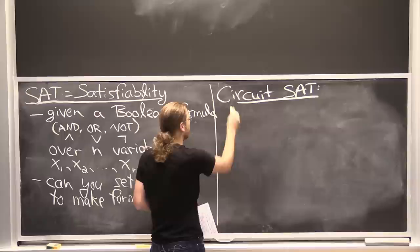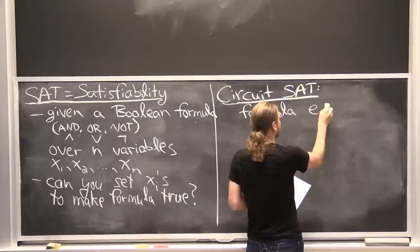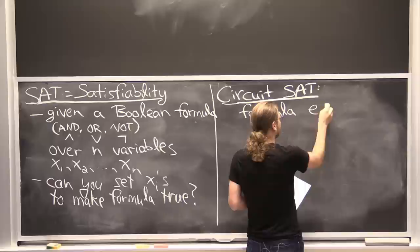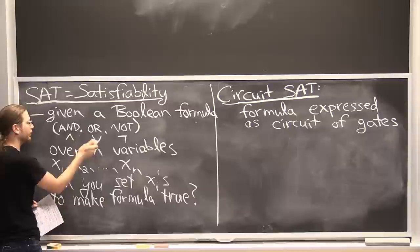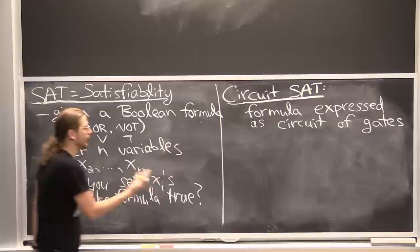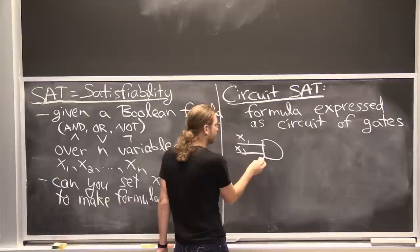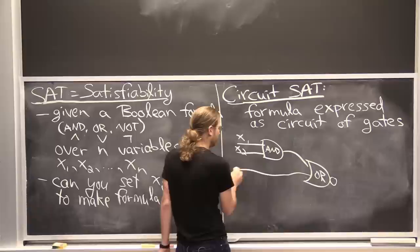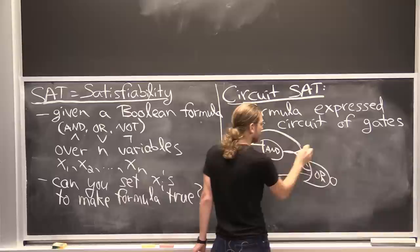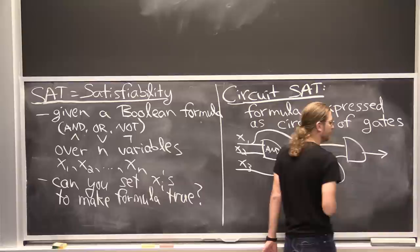Another version of the same problem is Circuit SAT. This is a useful perspective that also makes the NP-completeness a little more intuitive. Instead of the algebraic way — variables, operators, parentheses — if you're more graphically inclined, you can imagine the xi's as wires connected to gates: AND gates, OR gates, and negation gates. You can copy data and do various things, and the output represents the formula.